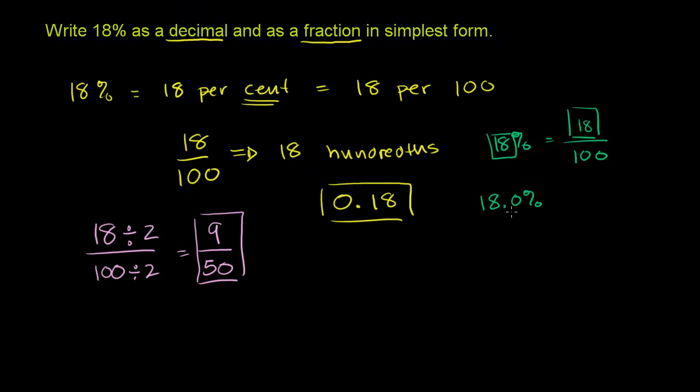But if you want to express this as a decimal without the percent, you just move the decimal to the left two spaces. So if we move the decimal to the left two spaces, 1, 2, this becomes 0.18.